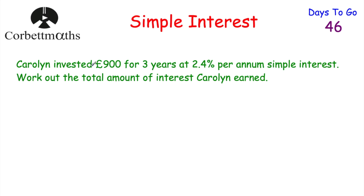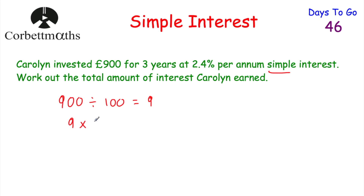She has £900 invested and it earns 2.4% per annum simple interest. Because it's simple interest, it's the same amount of interest every single year, so we just need to work out 2.4% of £900. We take £900 and divide by 100 to find 1%, which equals £9. Now we know 1%, we multiply by the percentage we want — so £9 multiplied by 2.4 — and that tells us 2.4% of £900, which equals £21.60.